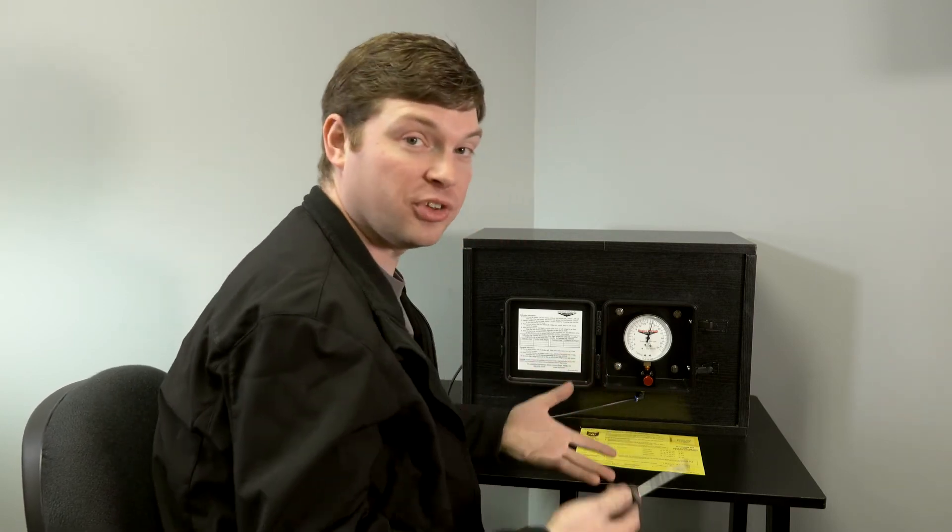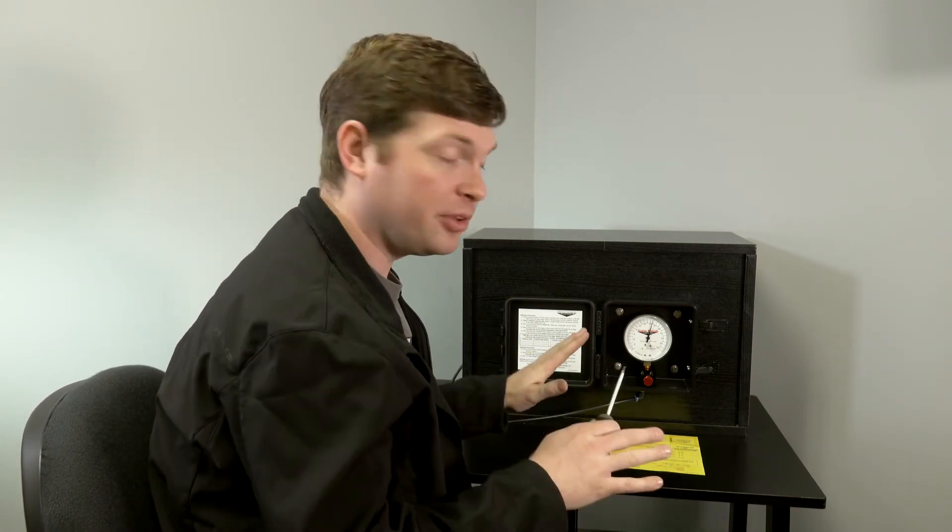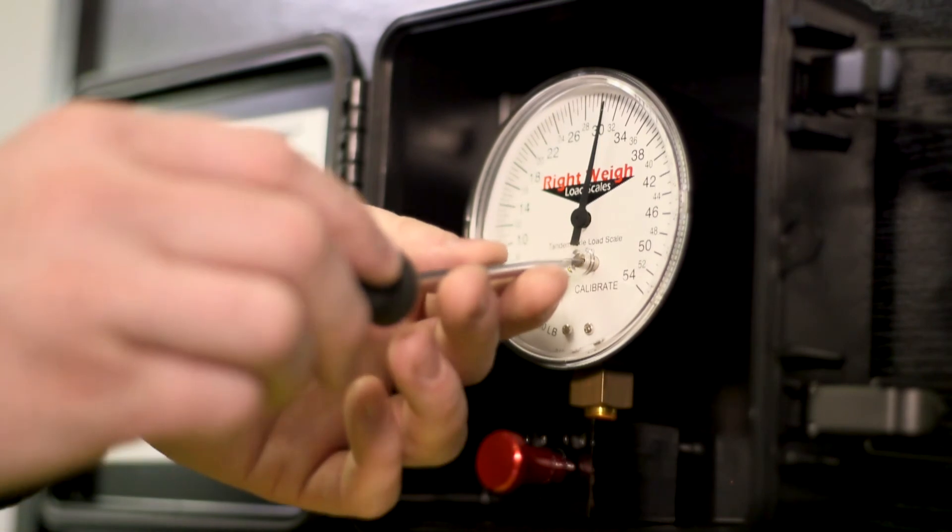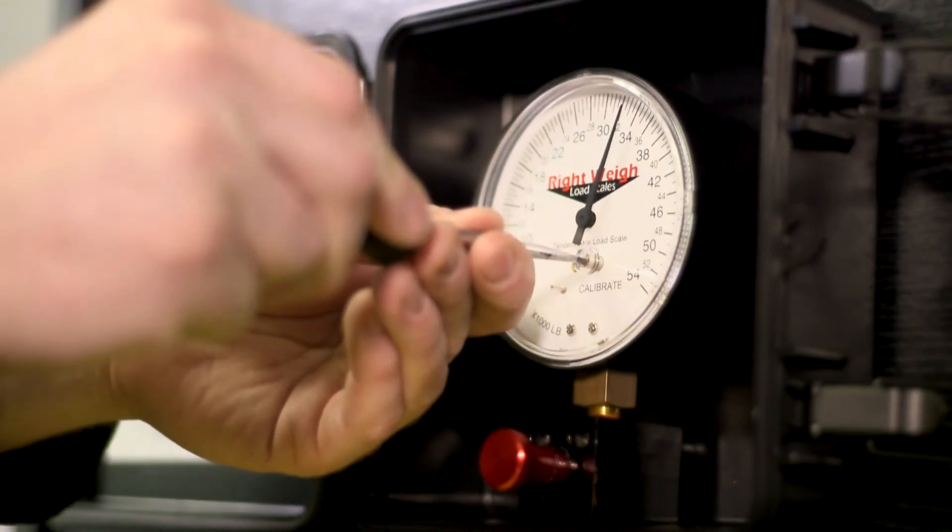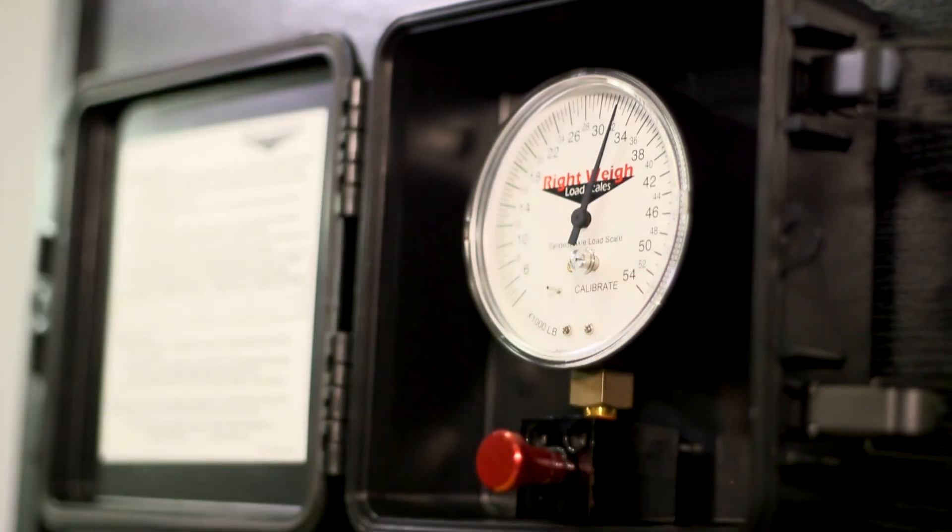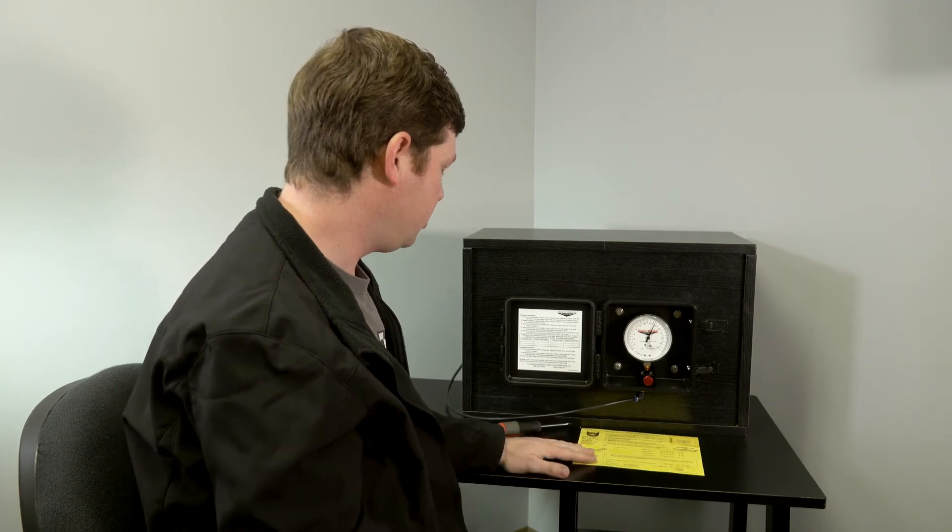So all we'll do after the suspension's all evened out, it's not moving anymore, we'll just turn this screw until it says 33. We'll just give it a little extra. So that's about 33,100. And that's it, it's all calibrated.